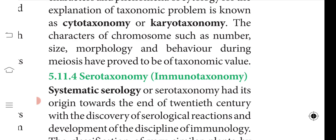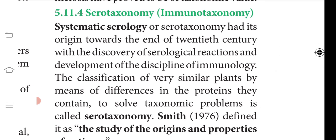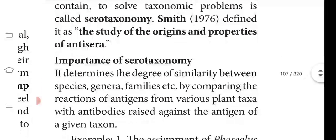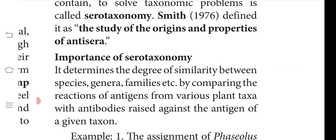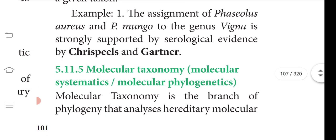Serotaxonomy, or systematic serology, is the classification of very similar plants by means of differences in protein at the serological level. It is quite similar to biosystematics. The importance of serotaxonomy is that it determines the degree of similarity between species, genera, or families by comparing reactions of antigens from various plant taxa with antibodies raised against those antigens.